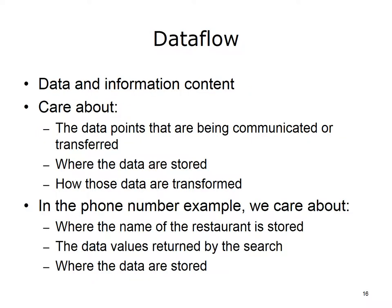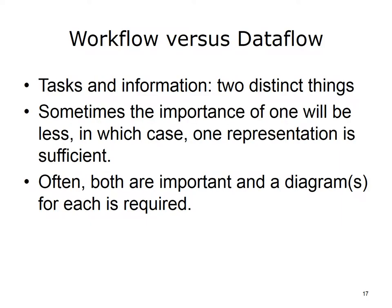On the other hand, dataflow is about data and information content. Often, the mechanism and steps by which it is moved are unimportant. In dataflow, what we care about are the data points that are being communicated or transferred, where the data are stored, and how those data are transformed. In the phone number example, we care about where the name of the restaurant is stored — for example, was it recalled from memory or from a personal Rolodex. We care about the data values returned by the search and about where the data are stored, so we know where to search. Adequately representing workflow or tasks and dataflow or information requires clear analysis. Tasks and information are two intertwined but distinct things. Sometimes the emphasis on workflow or dataflow is less, and just one representation can be used. Other times, both are significant and both representations are needed.